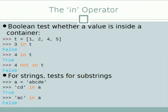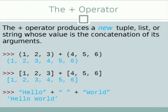For strings, we can test for substrings. Given 'a = "abcd"': 'cd in a' returns True; 'ac in a' returns False because 'ac' is not a substring of 'abcd'. The plus operator produces a new tuple, list, or string whose value is a concatenation of the arguments. So '(1, 2, 3) + (4, 5, 6)' returns a new tuple '(1, 2, 3, 4, 5, 6)'. The same is true for lists and strings.